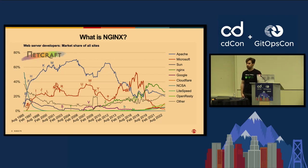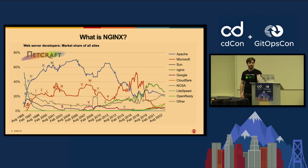As of April 2023, it's the most used web server in the world. In the almost 20 years since it was first created, a bunch of new features have been added. Today, in addition to being a web server, you can use Nginx as a reverse proxy, as an API gateway, as a content cache, as a CDN, as a WAF, and the list goes on.